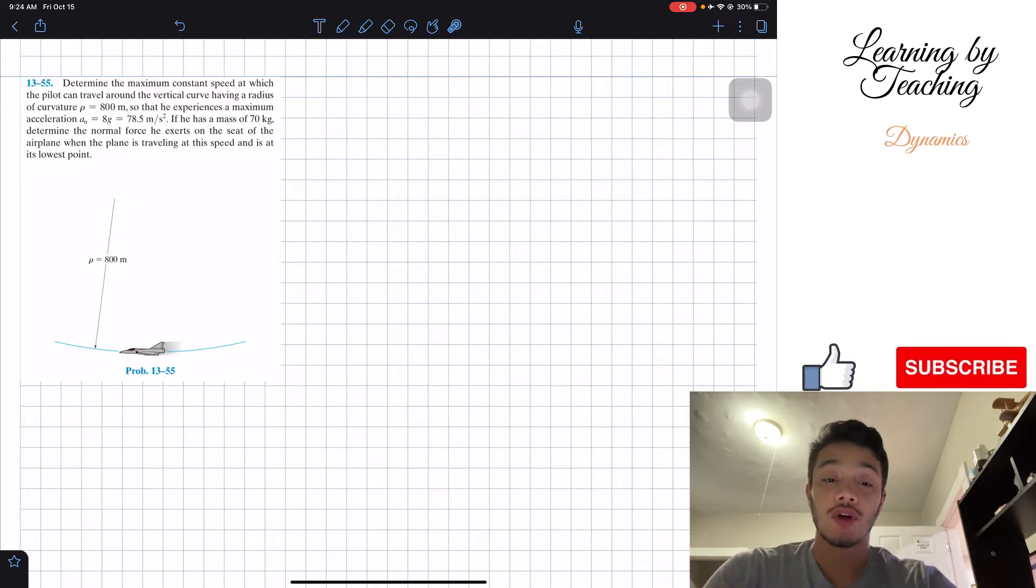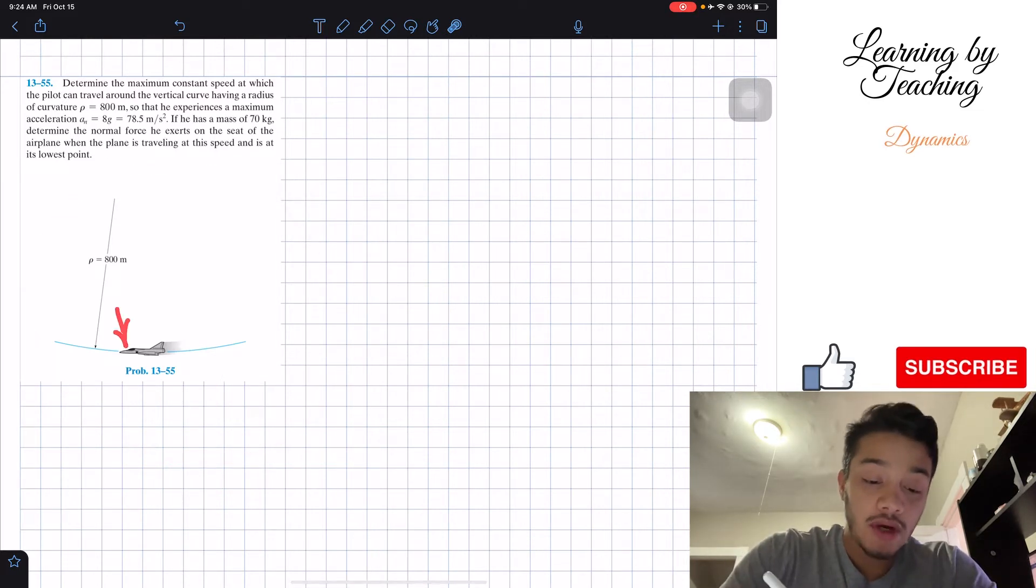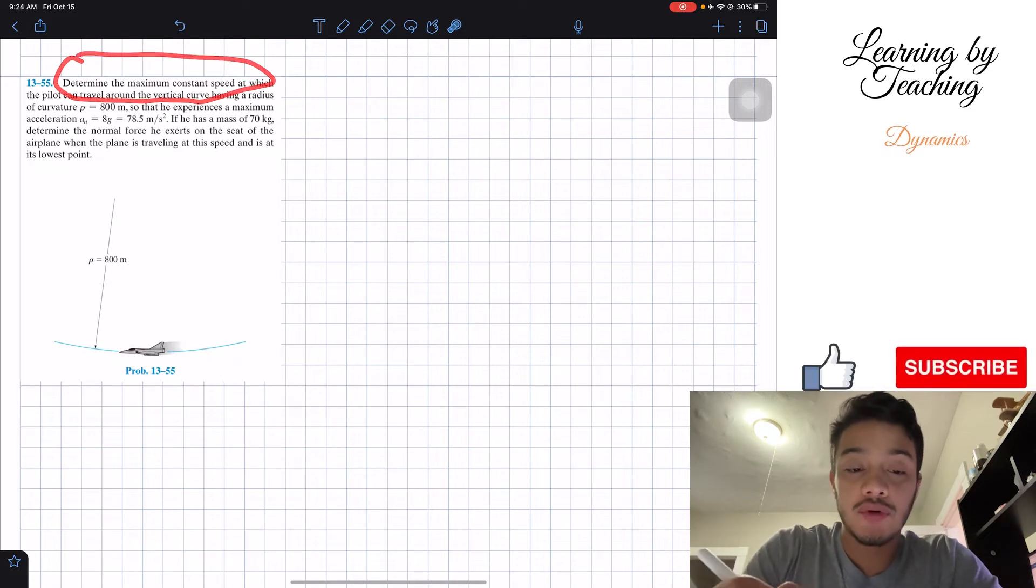So what we can see in here is they're giving us that we have a plane. Inside our plane, we are assuming that we have a pilot, of course, and it's driving to this radius of curvature of 800 meters. They're asking us two things.